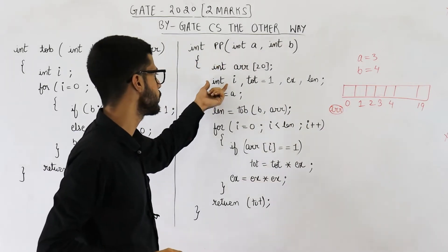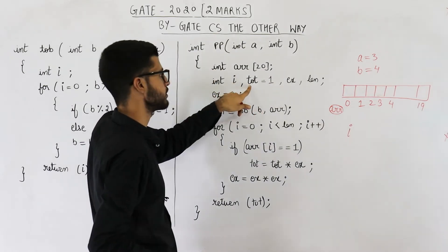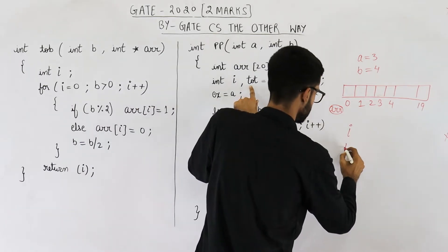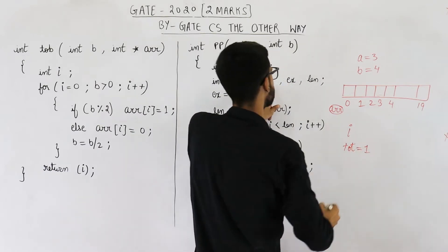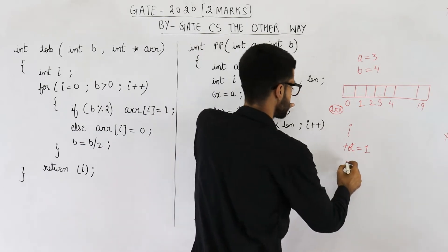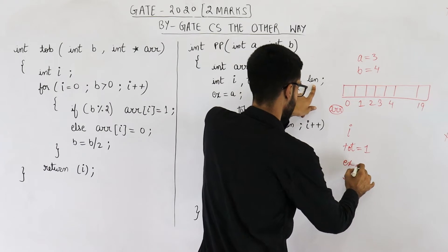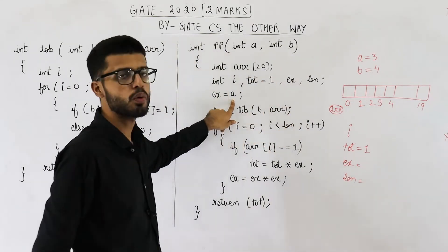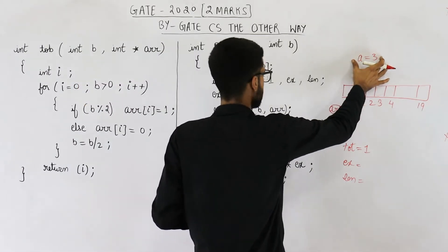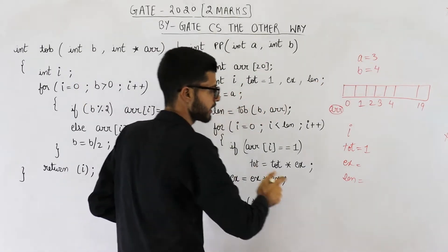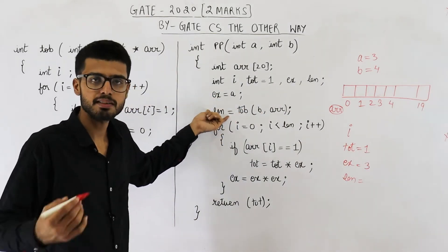Then you declare some more integers: i, tot with an initial value of 1, ex, and len. In the next line, whatever is saved in a is assigned to variable x. Since a holds 3, the value 3 is assigned to x.